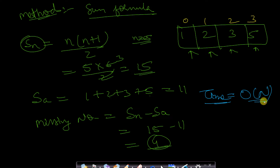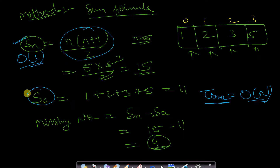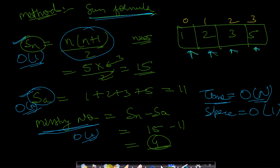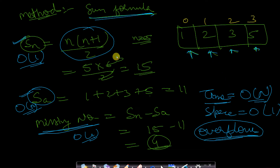The time complexity of this approach is O(n): computing SN using the formula takes O(1), and computing the array sum takes O(n) by iterating through all elements. The space complexity is O(1) since no extra space is used. However, this method can have integer overflow issues if the array elements are very large.